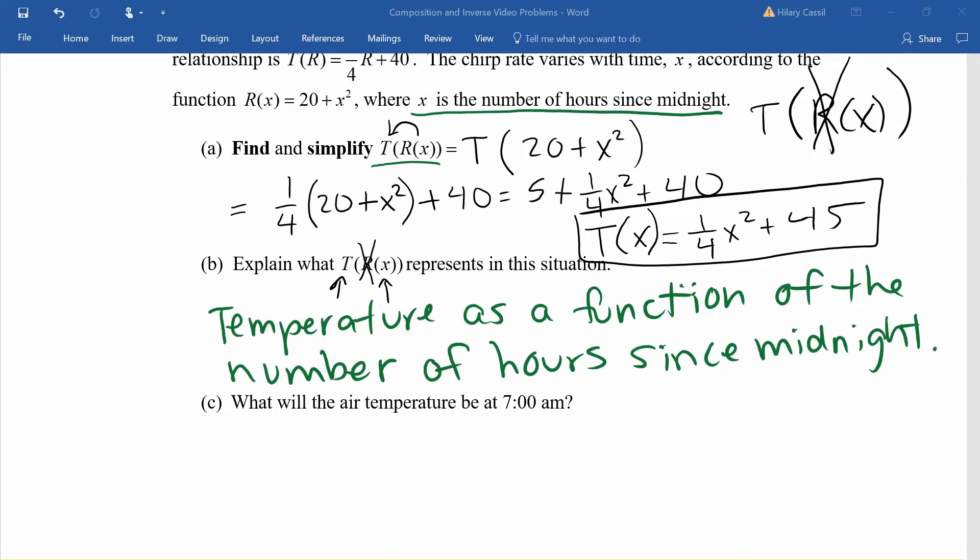If we want to finish this by finding the air temperature at 7 a.m., we are going to use our composite function because that's what our composite function gives us: the temperature if we know the number of hours since midnight. Plugging in 7 for x will give us an answer of about 57.3 degrees Fahrenheit at 7 a.m. I hope this has been helpful.